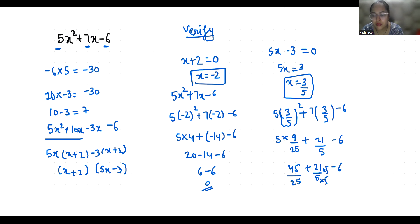So 45 by 25 plus 105 by 25 minus 6. So it becomes 150 by 25 minus 6. So it will multiply with 25 numerator and denominator. 150 minus 150 by 25, so that is 0 by 25 is 0.